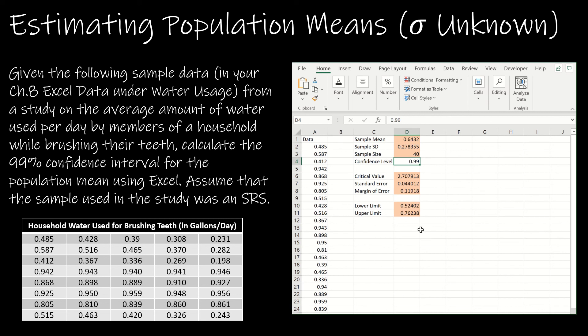What are we trying to find? We're trying to find a 99% confidence interval for the population mean, which is the study on the average amount of water used per day. So I'm going to assume this is in gallons. Gallons per day based on the chart. So the lower limit is 0.52. So we are 99% confident that the gallons of water used by an average household while brushing teeth is between 0.52 gallons and 0.76 gallons.